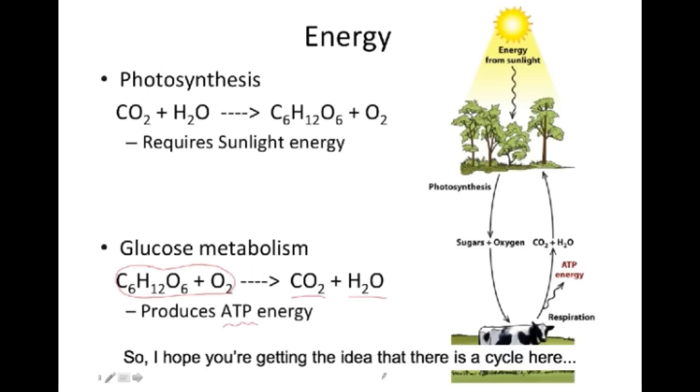So I hope you're getting the idea that there's a cycle going on here. Respiration breaks down glucose and produces CO2, which is then used during photosynthesis to produce glucose, which serves as food energy, and the cycle continues.